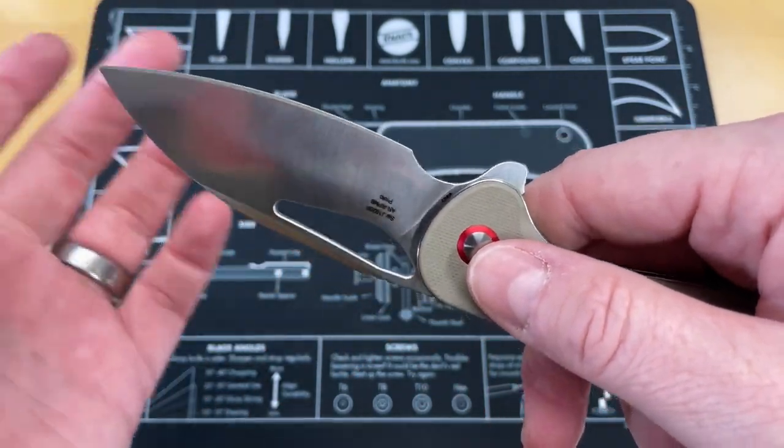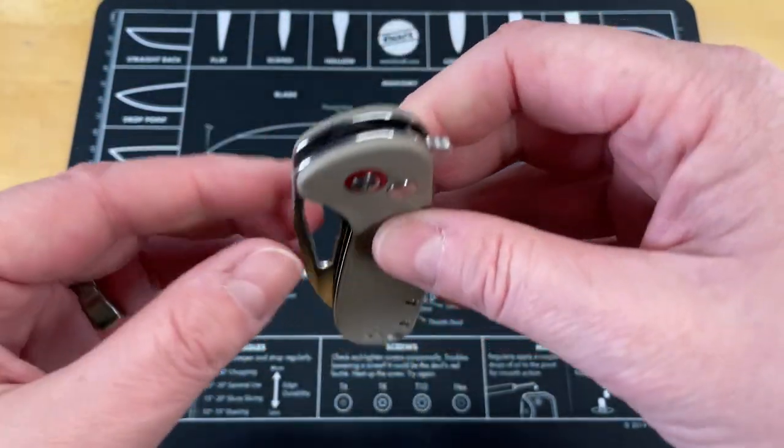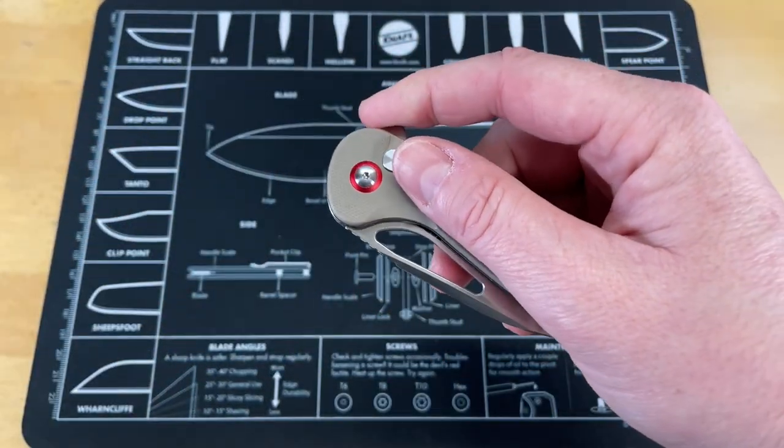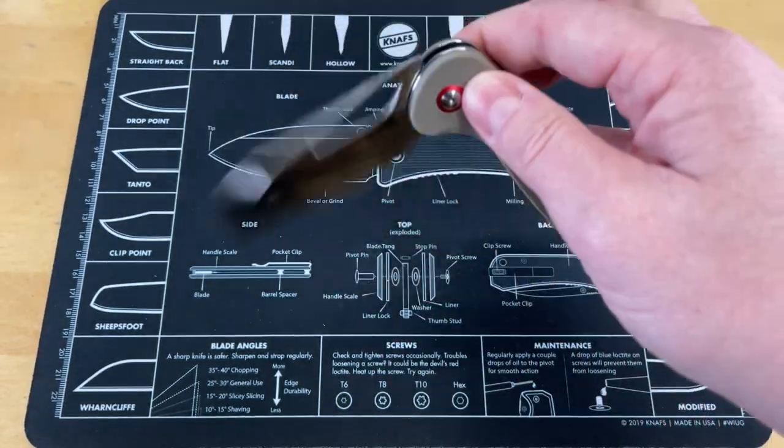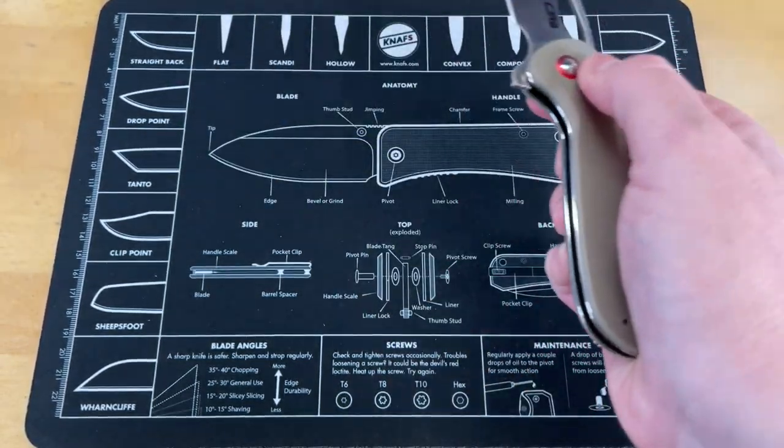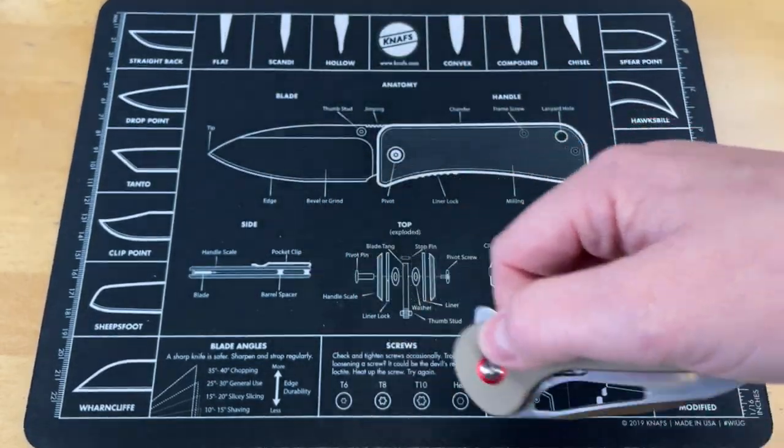Super nice blade that's ground really nicely. It is a button lock that runs on bearings. You've got three different deployment methods: back flipper, reverse flip, and your typical button lock with free action. You can snap it, it's hard to do with a tripod in the way.